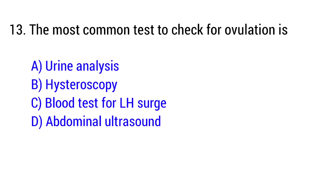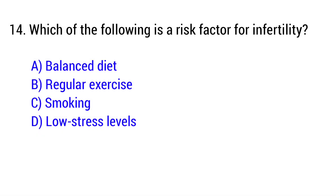Question number 13: The most common test to check for ovulation is — the right answer is Option C: Blood test for LH surge. Question number 14: Which of the following is a risk factor for infertility? The right answer is Option C: Smoking.